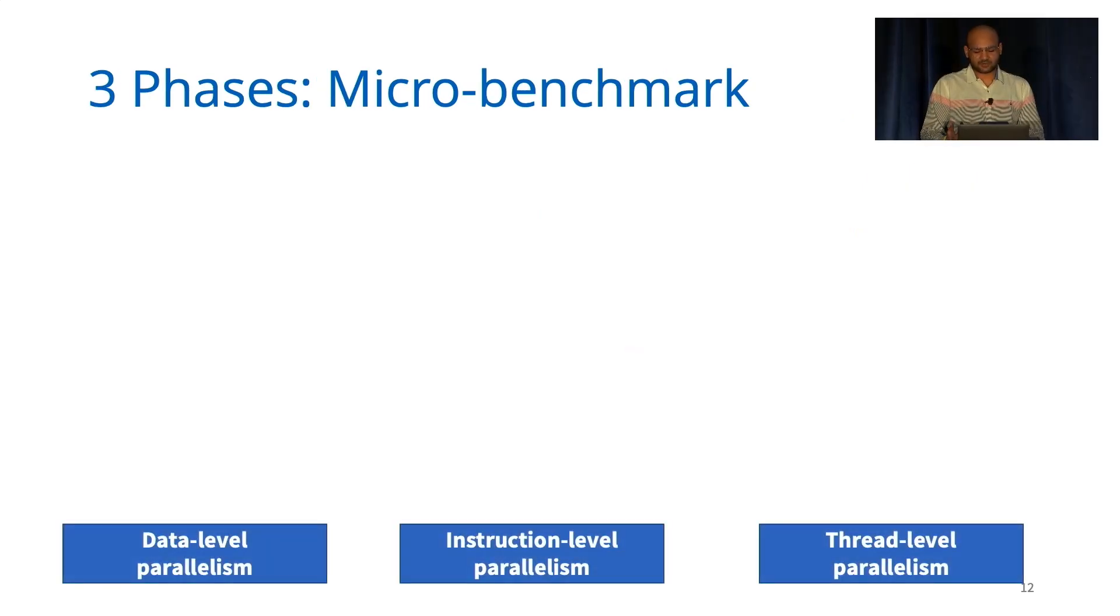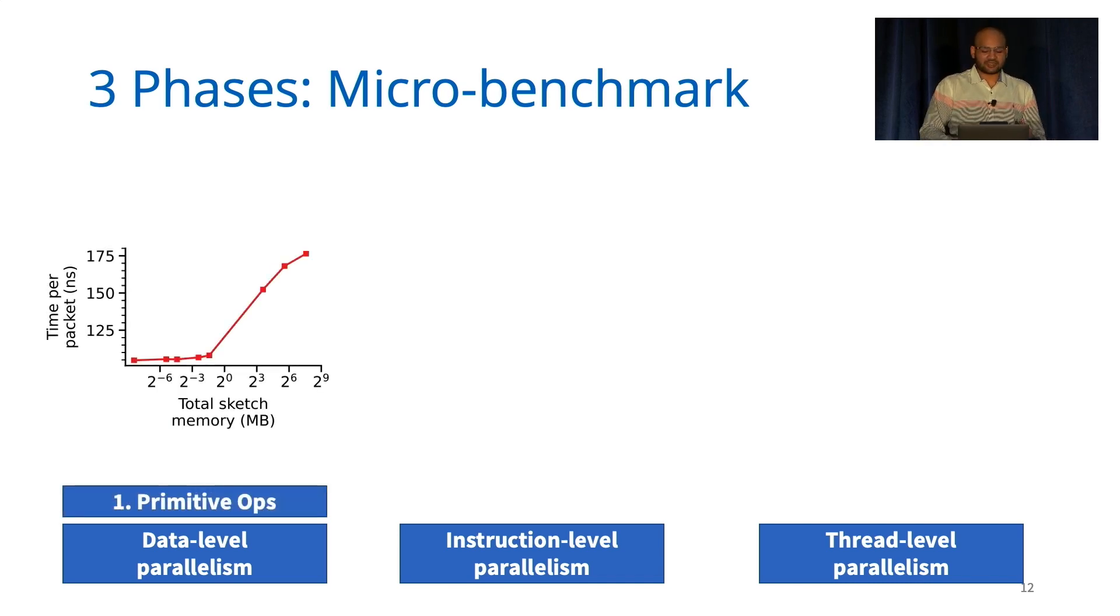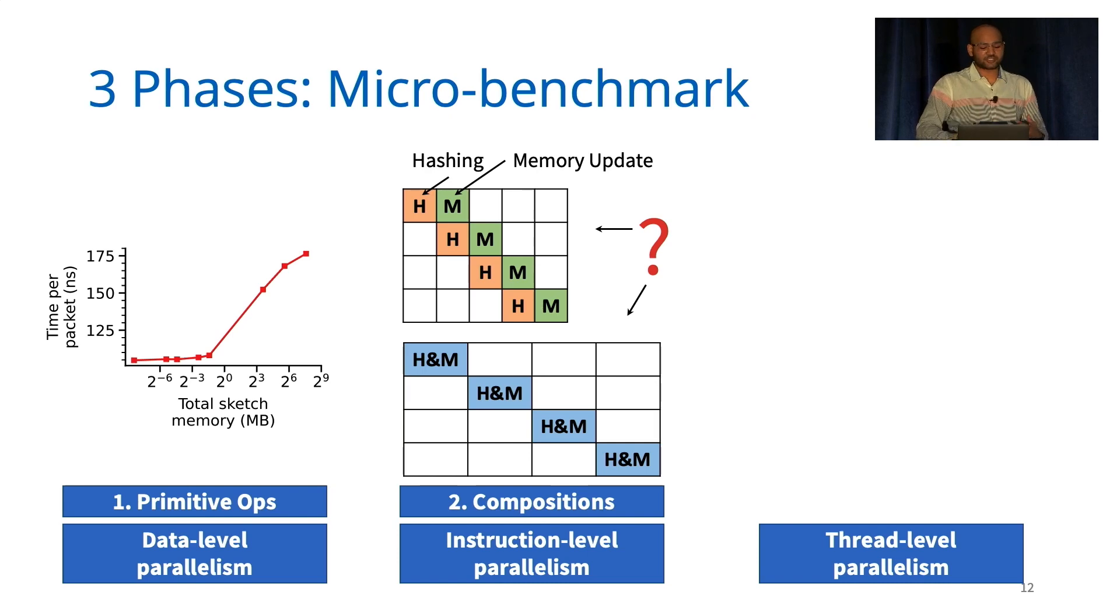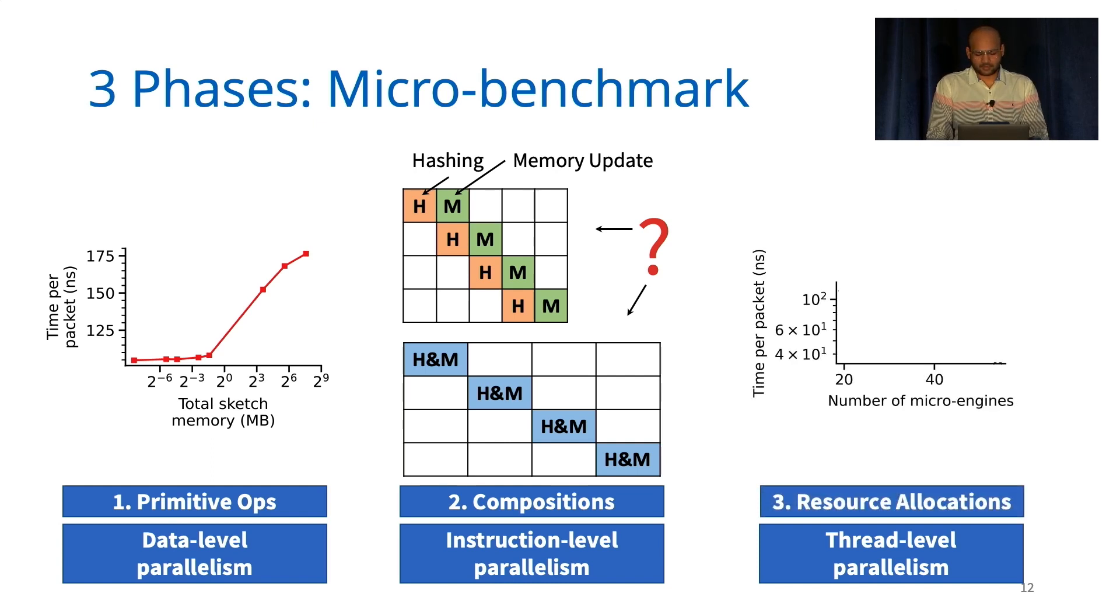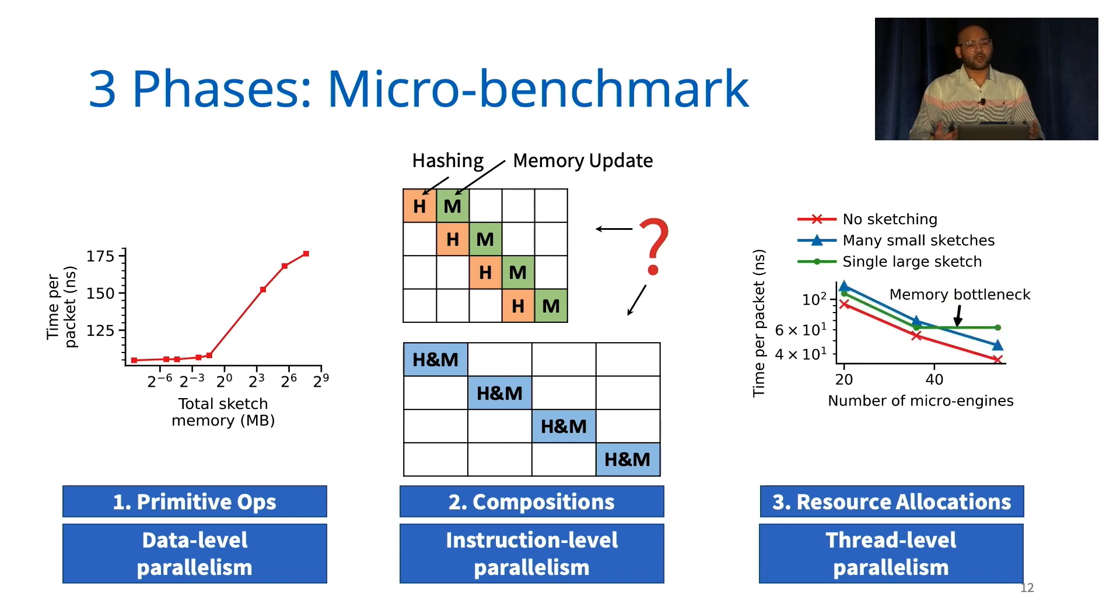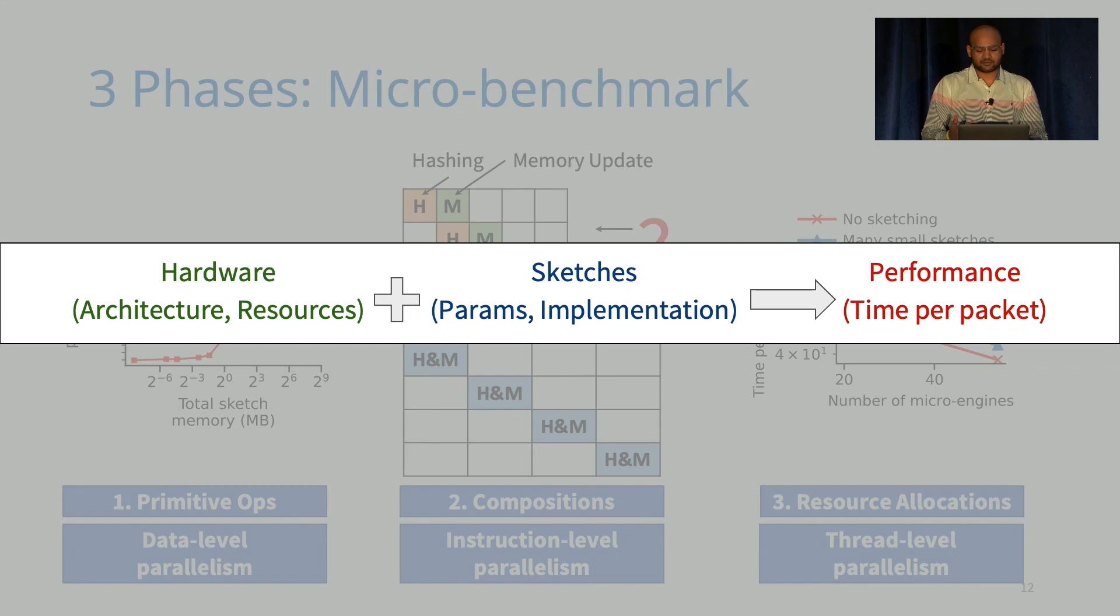It uses three different phases of benchmarks to study different levels of parallelism. In the first phase, it tries to understand how the time for primitive operations, such as hashing and memory updates, scale as we vary the configuration of different sketches. In the next phase, it tries to study how the primitive operations compose. Is it that these operations can be done independently, or do they stall each other? In the last phase, the profiler tries to understand how performance changes as we change the amount of resources. With all these three types of benchmarks, the profiler can combine them to express sketch performance in the form of algebraic relationships. These relationships can then guide the optimizer to make intelligent decisions.